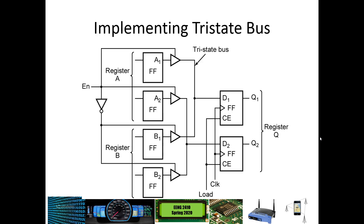Here is one way to implement a tri-state bus. This wire here is the tri-state bus, and this is another tri-state bus here. This will allow either register A or register B to be connected to this D flip-flop, and the second bit of register A and the second bit of register B to be connected to this flip-flop over here. This is a simple example where we use tri-state buffers to determine which one is allowed to access that shared pathway.